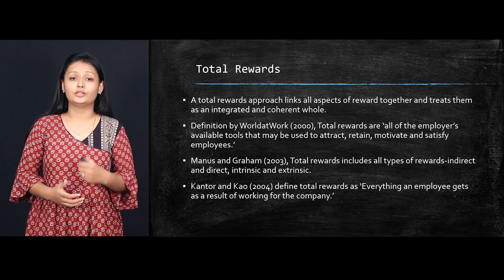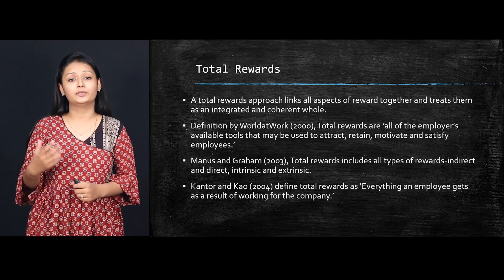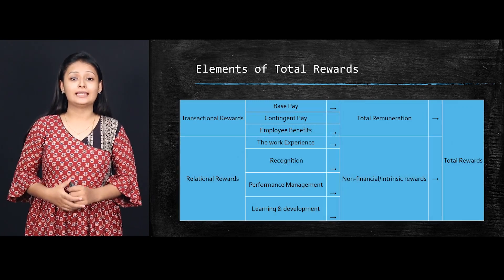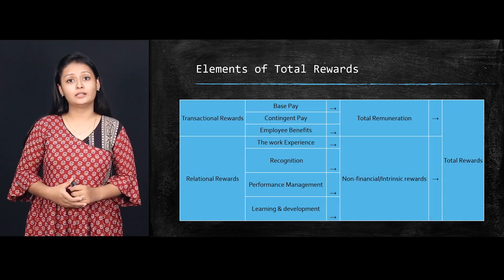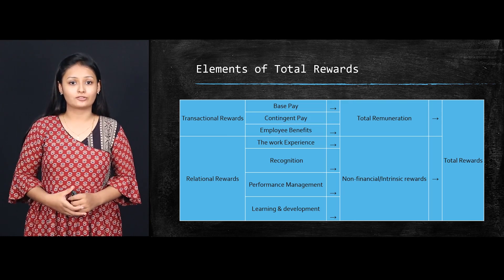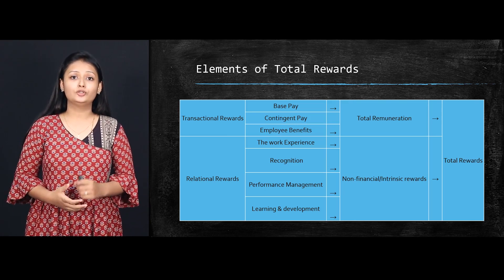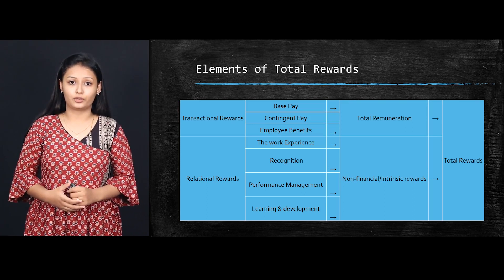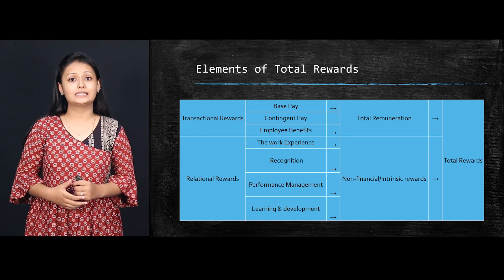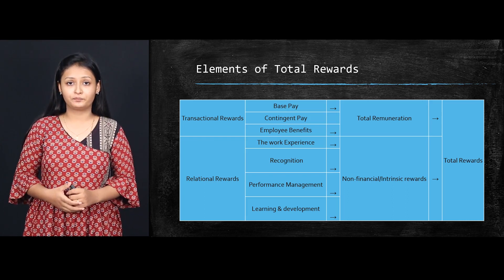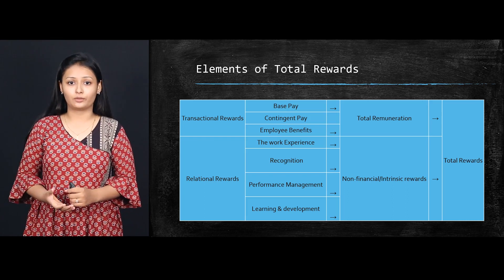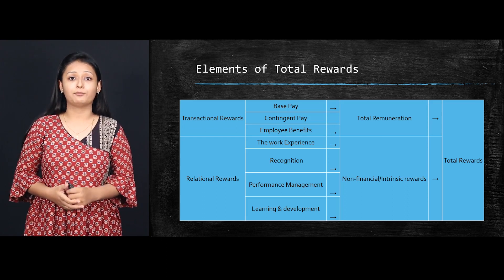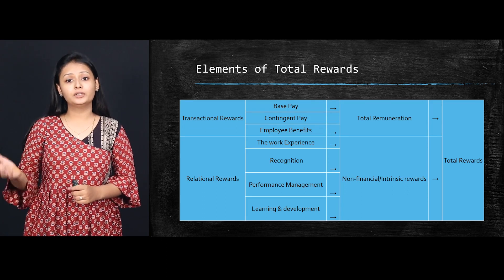You can design your total reward package as per your organization. Let's have a look at the elements of total rewards which can be included in your total rewards package. Basically there are two main elements: transactional rewards and relational rewards. Transactional rewards are the financial rewards — the extrinsic rewards — which include base pay, contingent pay, and employee benefits.